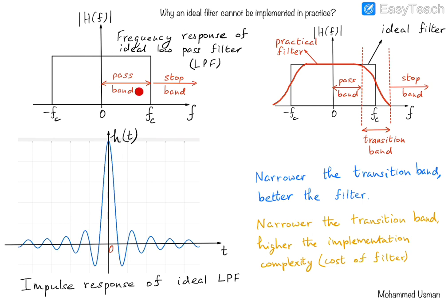Filters are systems which allow certain frequencies to pass through them and block certain other frequencies. Throughout the discussion of this video, we will use the example of a low pass filter and come up with an answer as to why an ideal low pass filter cannot be implemented in practice. Similar arguments will apply to other types of filters like a high pass filter or a band pass filter. So let us first look at the frequency response of an ideal low pass filter.